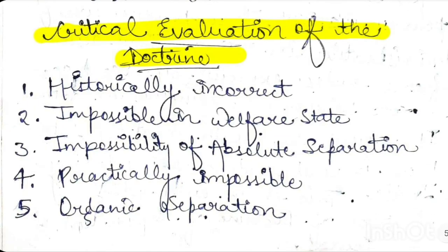Let's see some critical evaluation — on what basis is this doctrine criticized? First, from a historical aspect, in that context this doctrine is historically incorrect. Establishing a welfare state is considered impossible under this principle. Similarly, absolute separation in a state is not practically achievable. We have seen in India and even in the US — whose constitution is based on this doctrine — it is practically impossible to apply this principle absolutely in any country.